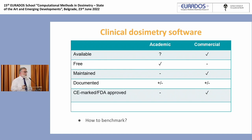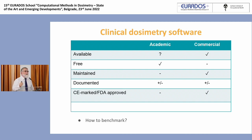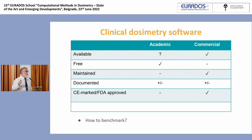The question for academic software is: are they available? Basically, someone may have developed the best software ever but is not giving it to you unless you sign that they will be included in your publication. That does not qualify as available software. Academic software can be free, and are usually free — not necessarily because people in academia are very open and willing to share, but because they do not have a system to charge anyone.